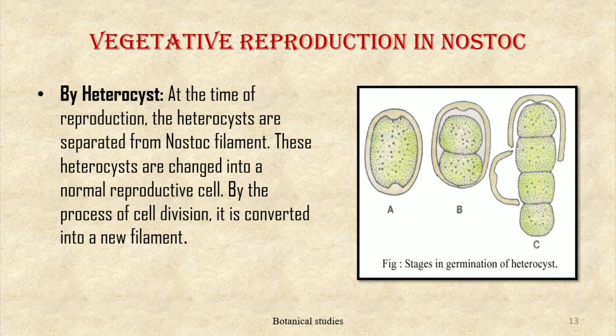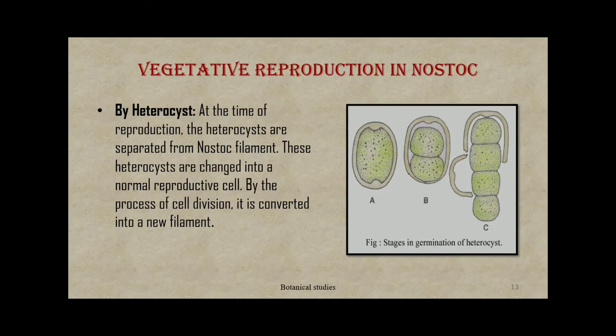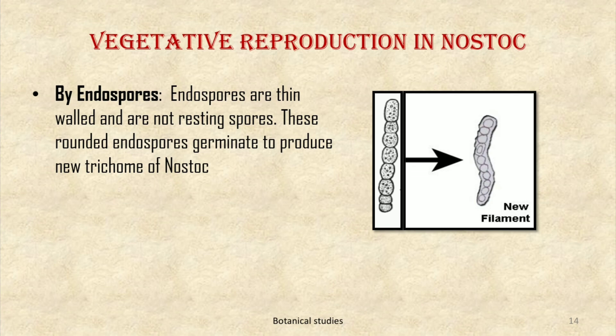Vegetative reproduction by heterocysts: at the time of reproduction, the heterocysts are separated from the Nostoc filament. These heterocysts are changed into normal reproductive cells by the process of cell division and are converted into a new filament.